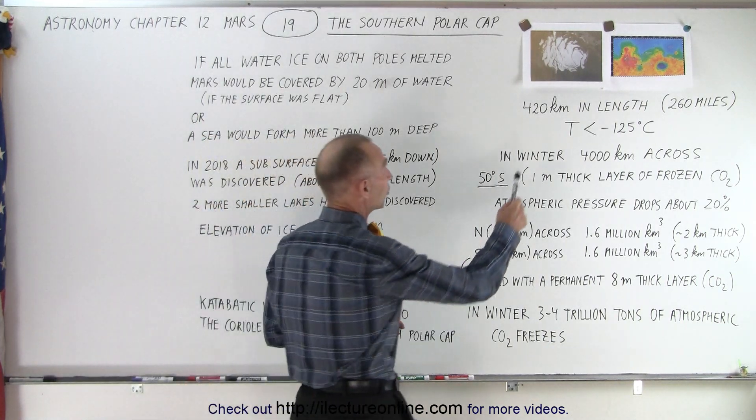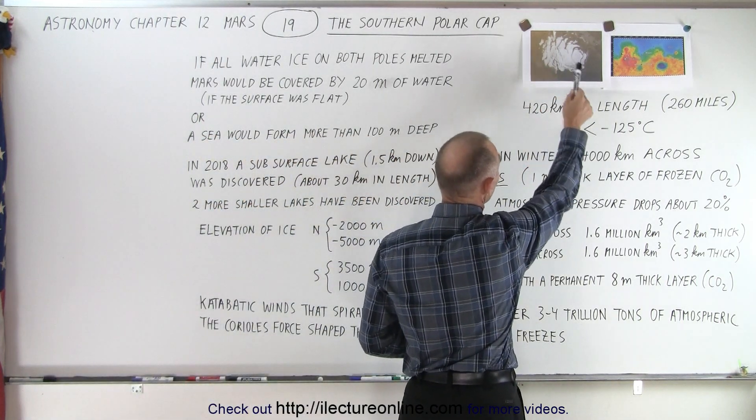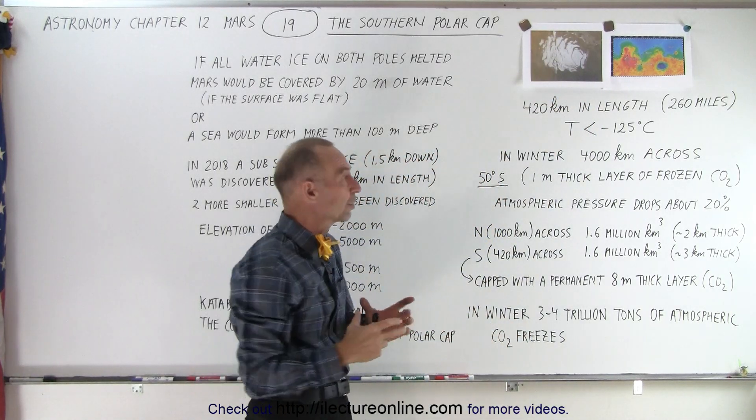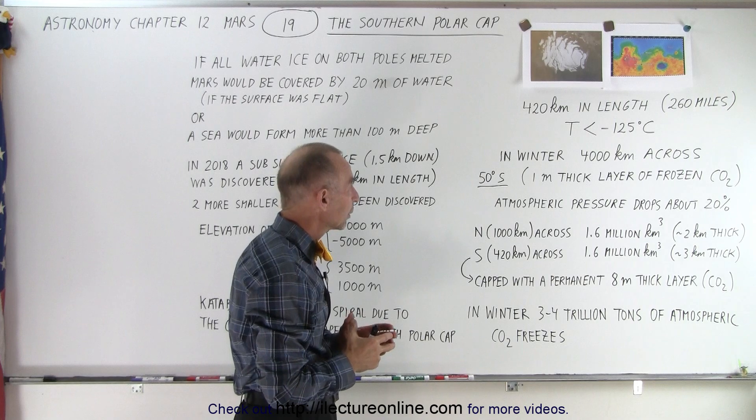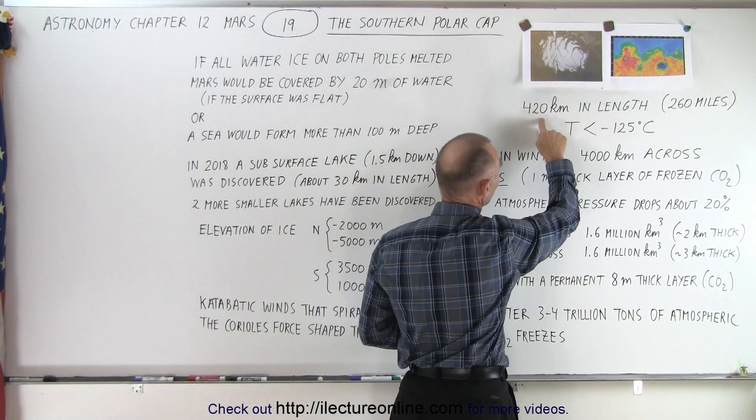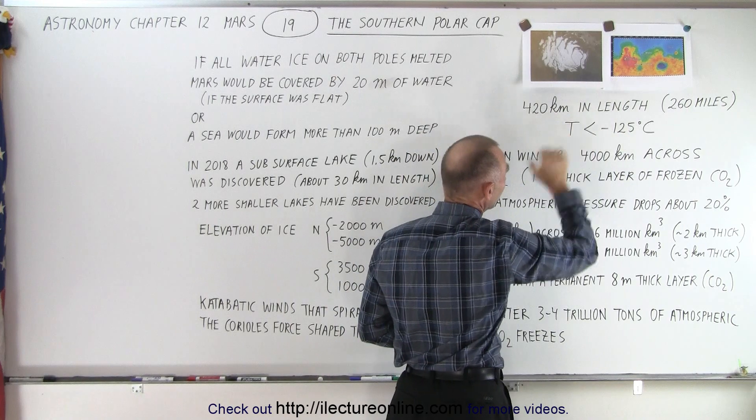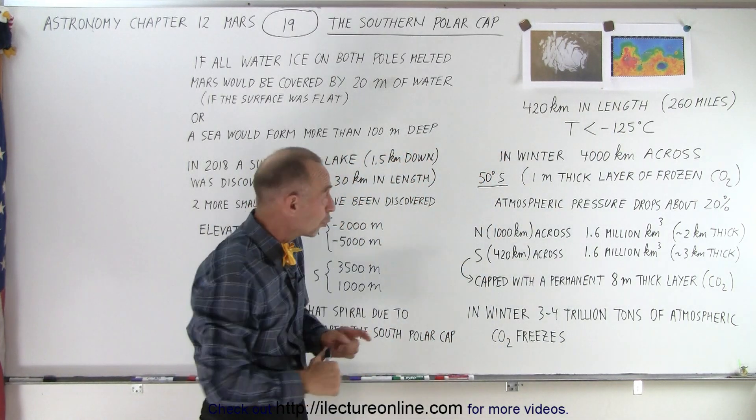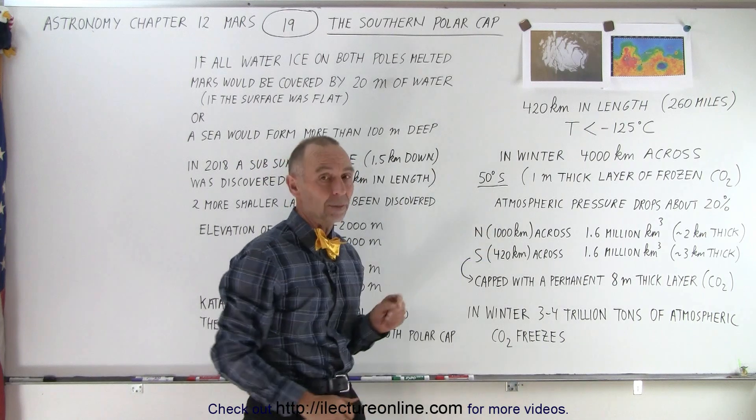Well, first of all, here's a little picture of what the polar cap looks like. It is quite a bit smaller than the polar cap at the North Pole. On the lengthwise, it's about 420 kilometers in length, about 260 miles and about 300 kilometers wide. When you compare it to the North Pole, it's about a thousand kilometers across.